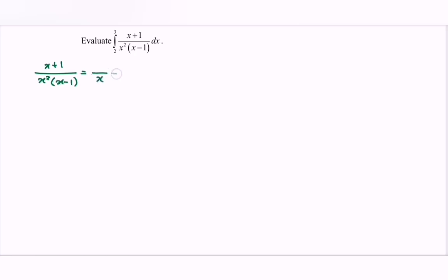First we have x, then we have x squared — this is what we call the repeated linear — plus we have (x - 1). So for x, we have the constant A. Next, for the repeated linear (not quadratic — we cannot say quadratic because we have x squared), first we have x, second we have x squared, so we still consider linear and we put B. Finally we have C, because we have the denominator (x - 1), which is linear, so C is a constant.